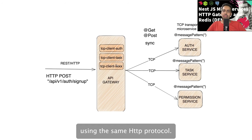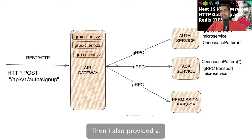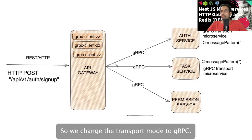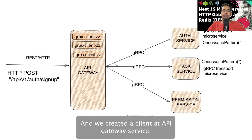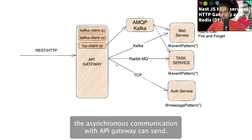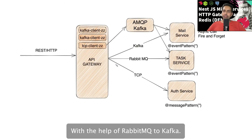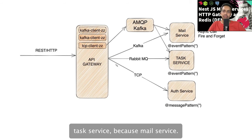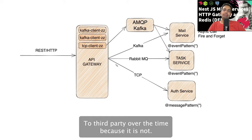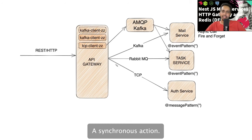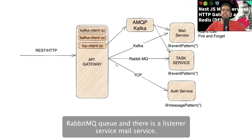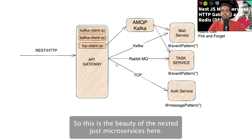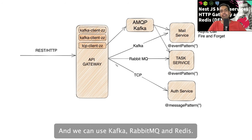I also provided a demo where the API gateway communicates to services using gRPC - we change the transport mode to gRPC and create a gRPC client at the API gateway service. We can also do asynchronous communication where the API gateway sends events via RabbitMQ or Kafka. The API gateway publishes an event, and there's a listener like a mail service, because sending email is not a synchronous action. We publish a command to Kafka or RabbitMQ and a listener service handles it - this is the beauty of NestJS microservices supporting pure asynchronous communication.